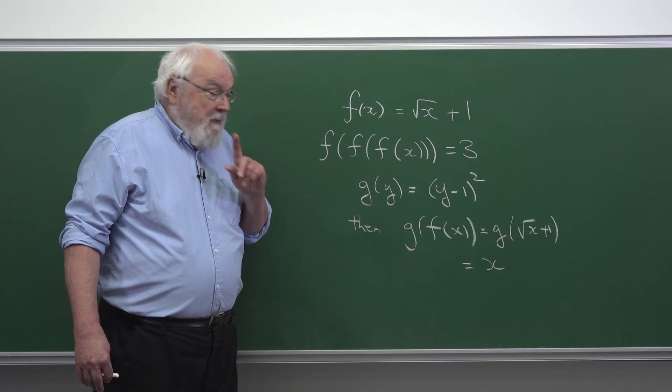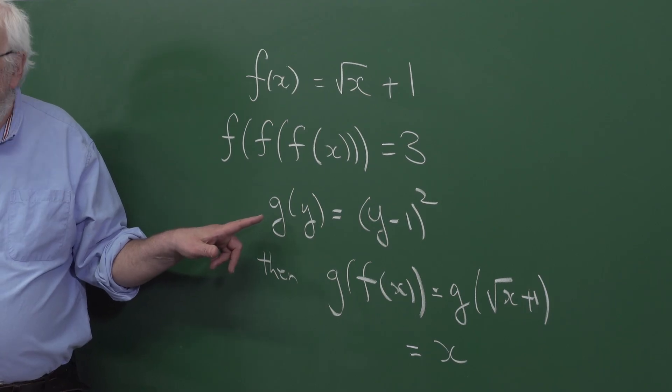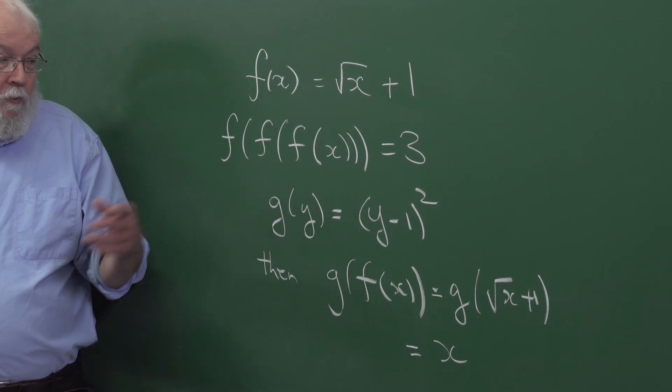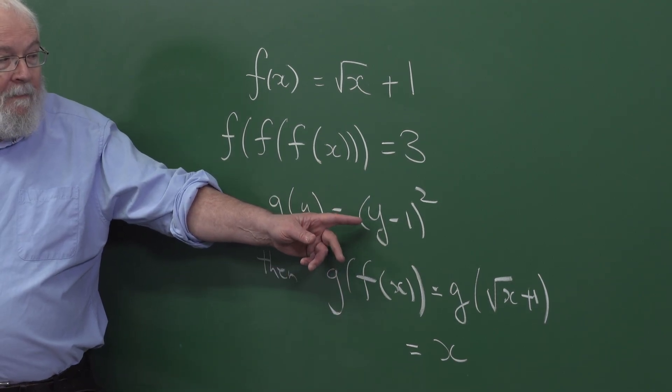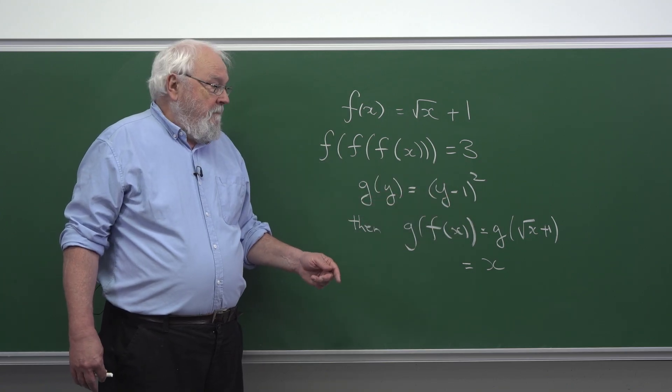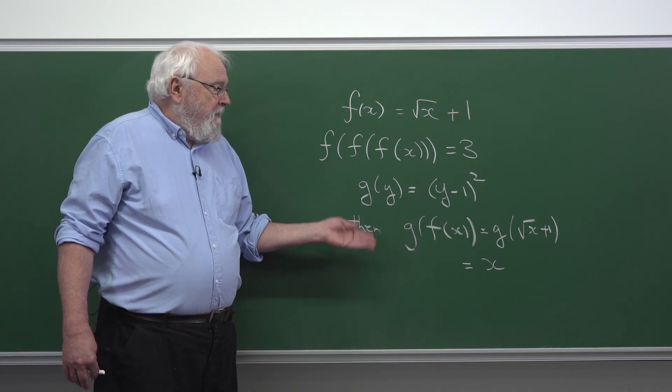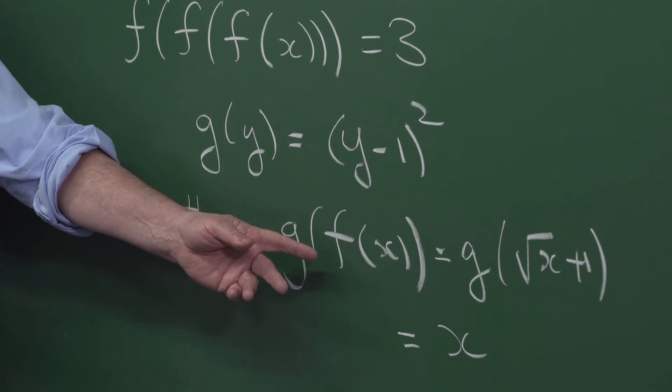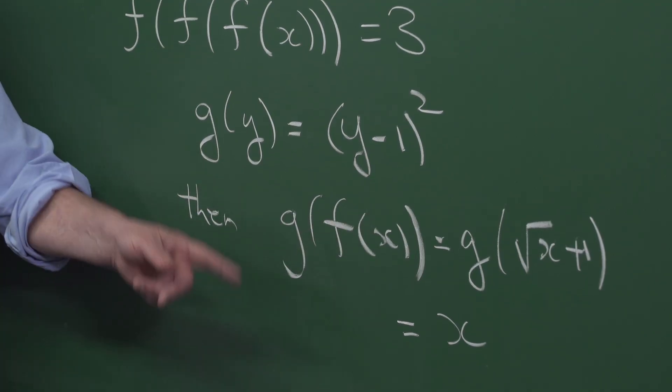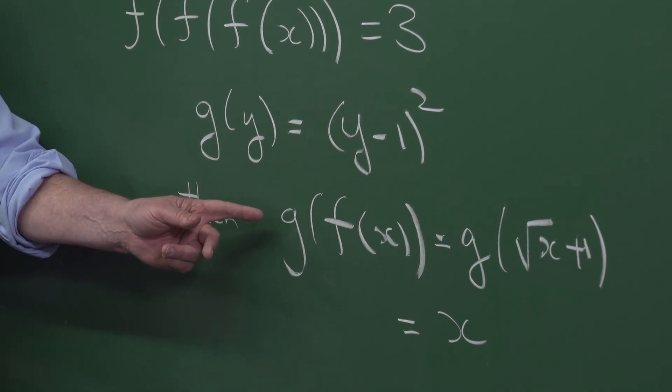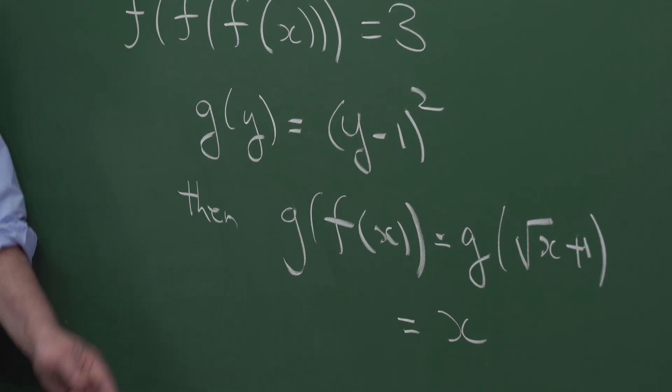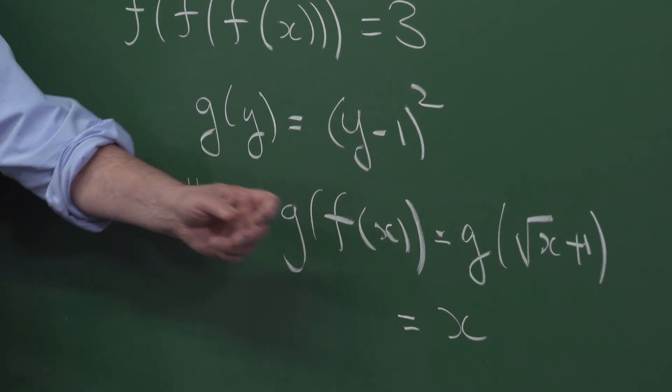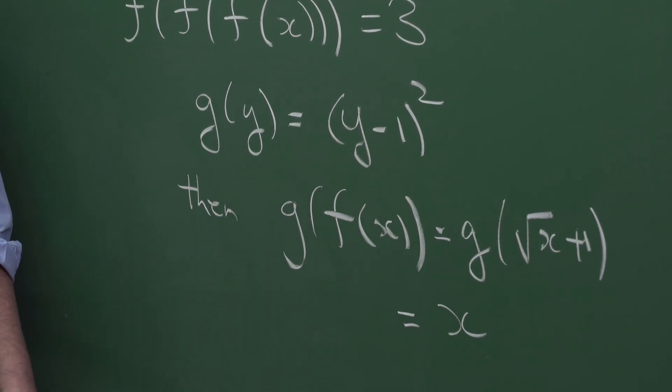So what that means is it's interesting to consider the function g, g of y say, where you subtract 1 from y and then you square it. This function is designed so that if you first apply f to anything and then apply g, what happens is you get x back. So putting a g in front of an f makes them both disappear.